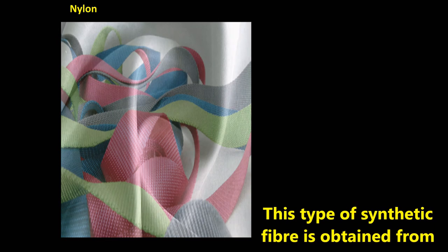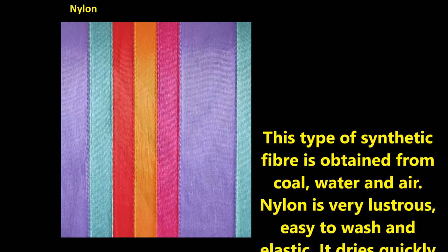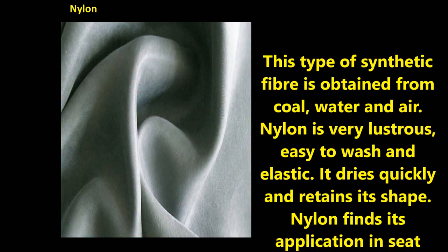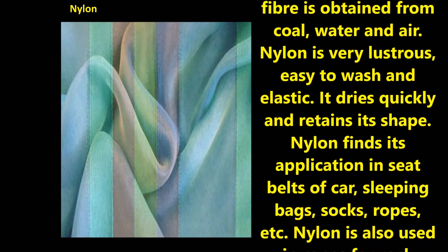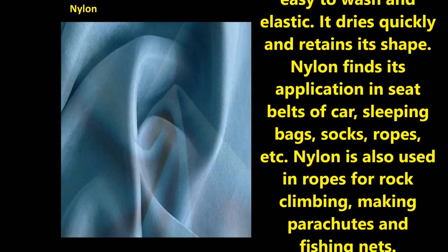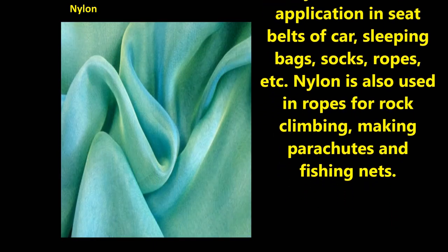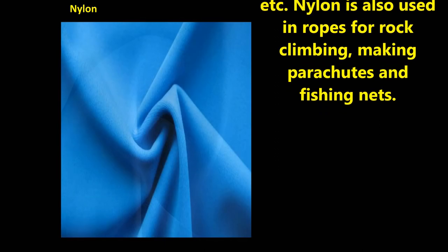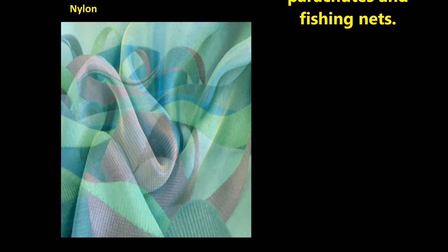Nylon is a type of synthetic fiber obtained from coal, water, and air. Nylon is very lustrous, easy to wash, and elastic. It dries quickly and retains its shape. Nylon finds application in seat belts of cars, sleeping bags, socks, ropes, etc. It is also used in ropes for rock climbing, making parachutes, and fishing nets.